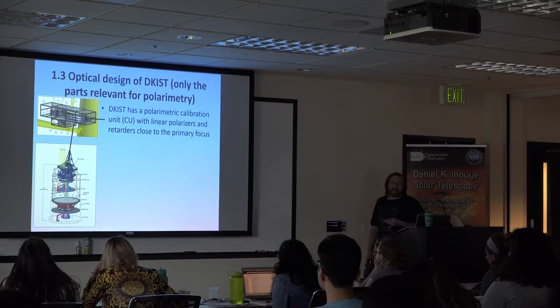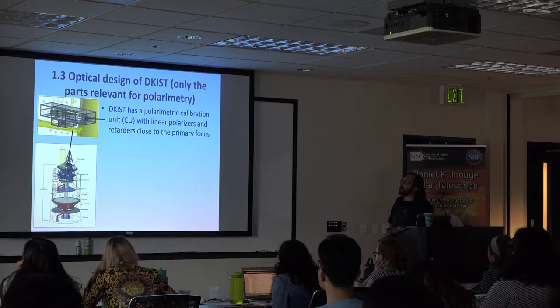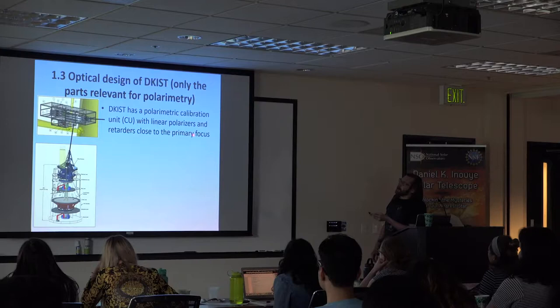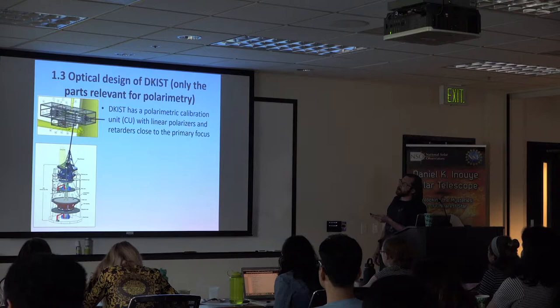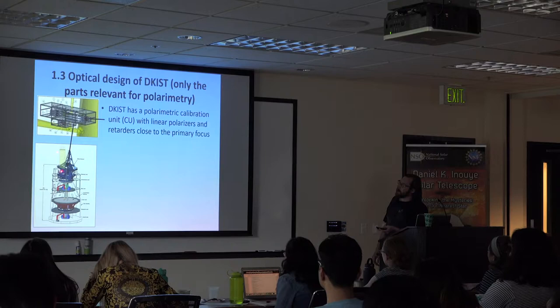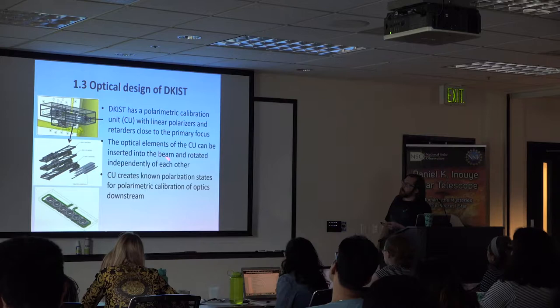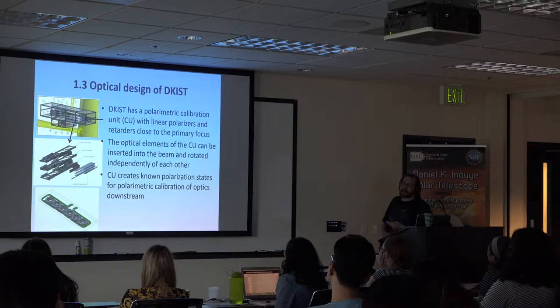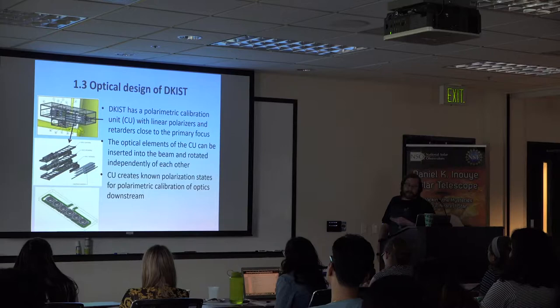DICAS is going to have a polarimetric calibration unit — PCU, not to be confused with Colorado University. It will have different linear polarizers and retarders, and it will be placed close to the primary focus of the telescope. Light comes in, hits the primary mirror, then the secondary, and the calibration unit sits in the first focus. It will have different optical elements, each on a linear slide so they can be moved into the beam, and each with a rotary stage so the calibration optics can be rotated independently.